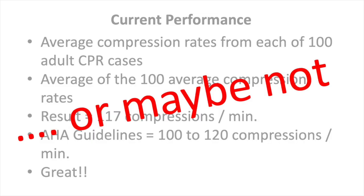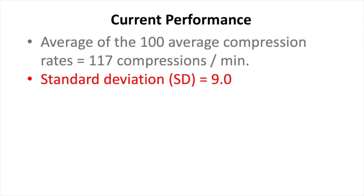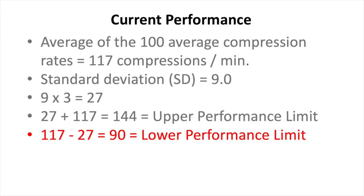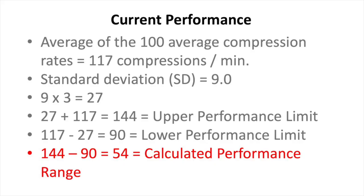Unfortunately, some might stop here thinking they were doing great — but they would be very misled. To get a better idea of true process performance, we need additional steps. We calculate a standard deviation, which turned out to be 9.0. We multiply it by 3 to get 27. We add 27 to our average of 117 to get an upper performance limit of 144. We subtract 27 from 117 to get a lower performance limit of 90. The difference between 144 and 90 gives us a calculated performance range of 54.